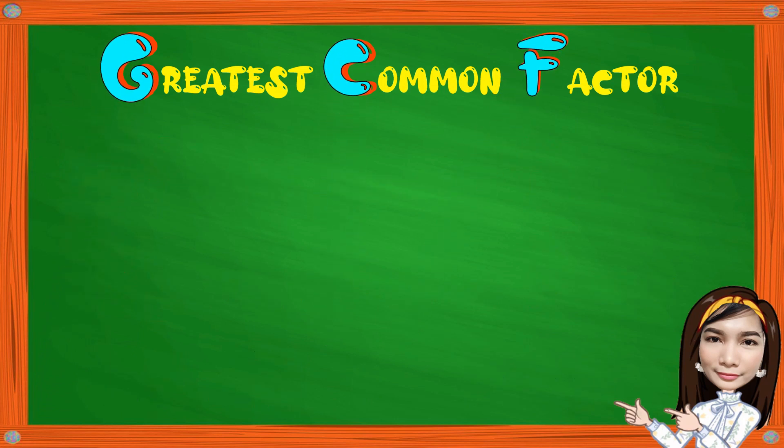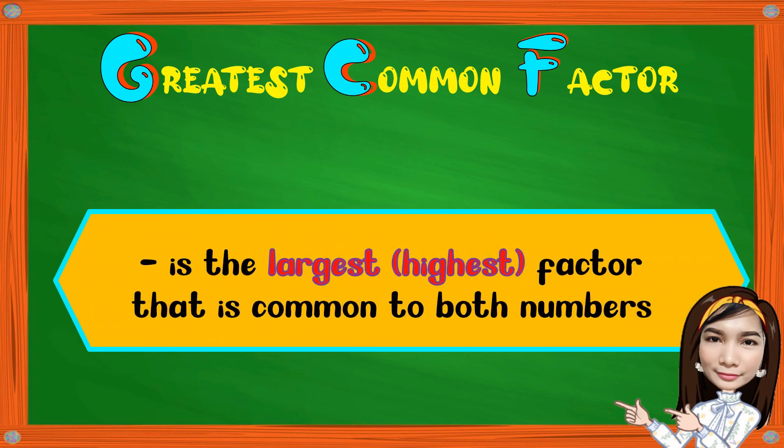We already defined the Greatest Common Factor in our previous lesson, but additionally, we can also define the Greatest Common Factor as the largest or highest factor that is common to both numbers. Common means same, similar, or like.